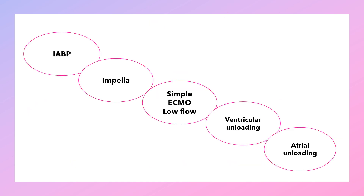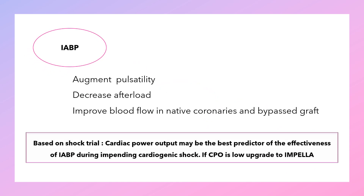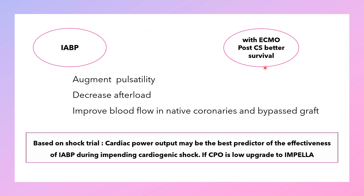These devices used in left ventricular unloading range from intra-aortic balloon to atrial unloading. Using an intra-aortic balloon with ECMO for left ventricular venting augments pulsatility, decreases afterload, and improves blood flow in native coronaries and bypass grafts. It was noted that using intra-aortic balloon with ECMO results in better survival after cardiac surgery. Based on the SHOCK trial, cardiac power output may be the best predictor of the effectiveness of the intra-aortic balloon during cardiogenic shock. If cardiac power output is low, we should upgrade to Impella.